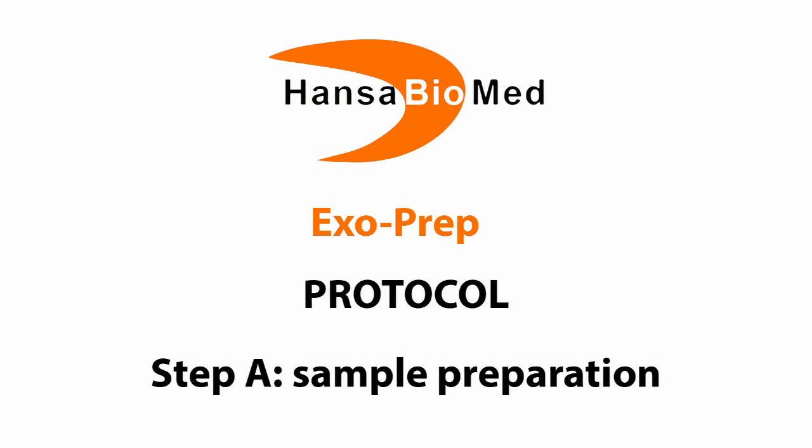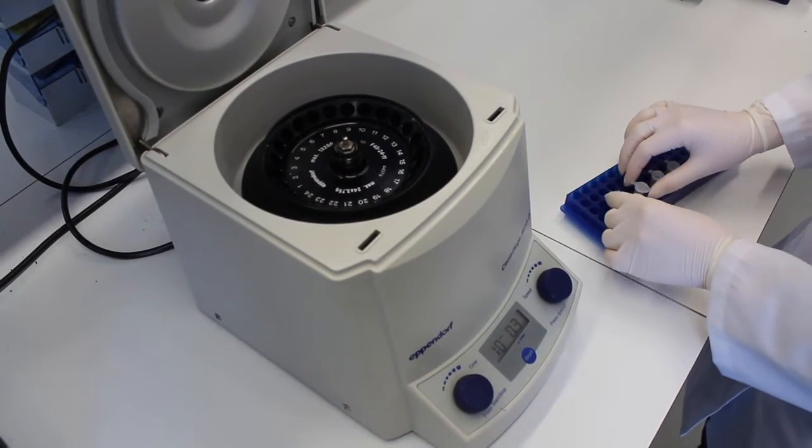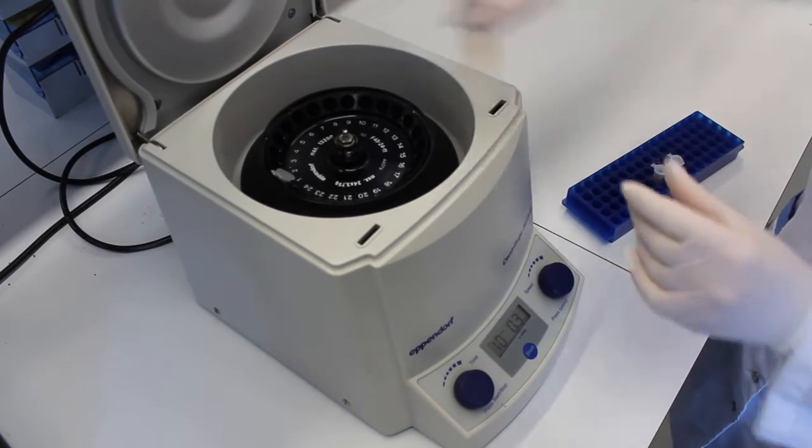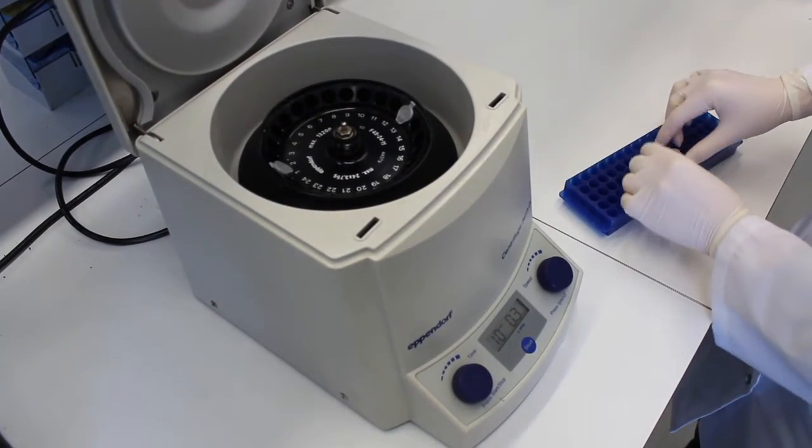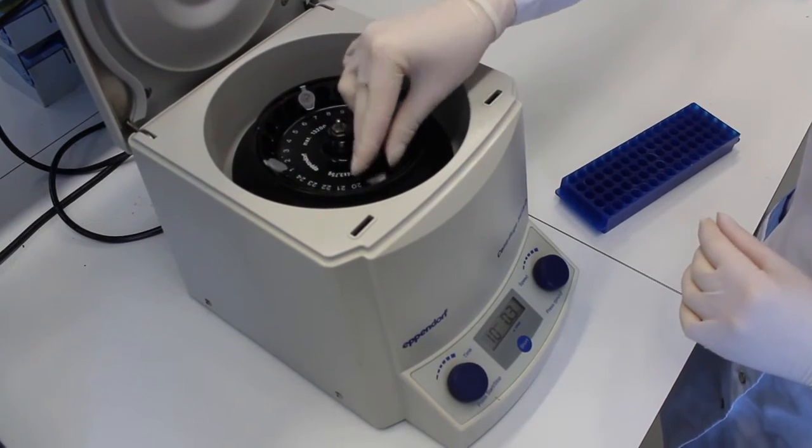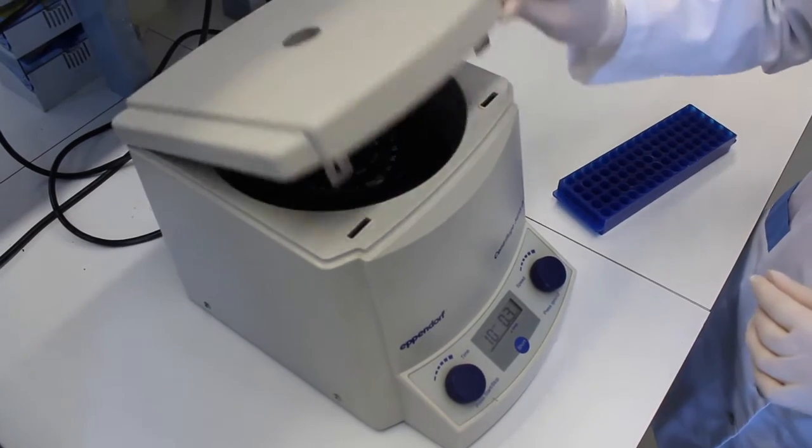Step A: Sample preparation. Prepare your samples by three centrifugation steps. First one 10 minutes at 300G. Second one 20 minutes at 1200G. And third one 30 minutes at 10,000G.